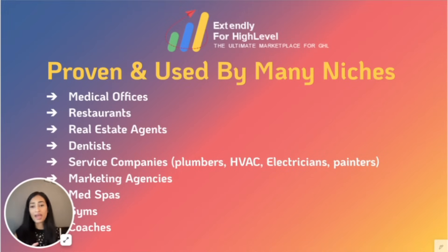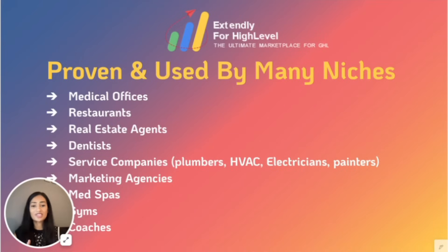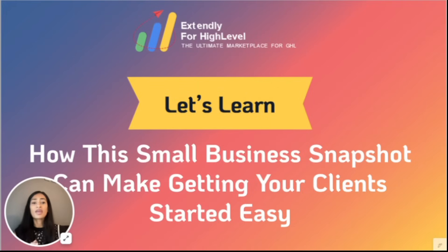We get constant feedback from those clients that are using it. We've taken all of that feedback to perfect it by making tweaks and improvements all the time. It's definitely not the easiest thing to build and has taken over a year and six different people with six different skill sets from our team to really perfect it. And we're still improving on it every day. So let's learn how this small business snapshot can make getting your clients started very easy.